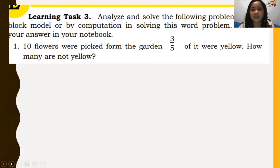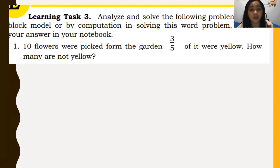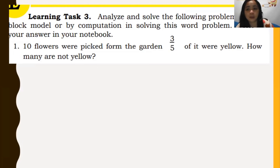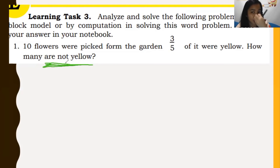Now we have Learning Task Number 3. Analyze the following problems. Use the block model or computation to solve the word problem. Write your answer in your notebook. Number 1: 10 flowers were picked from the garden. 3/5 of them were yellow. How many are not yellow? I will illustrate but not give the final answer.